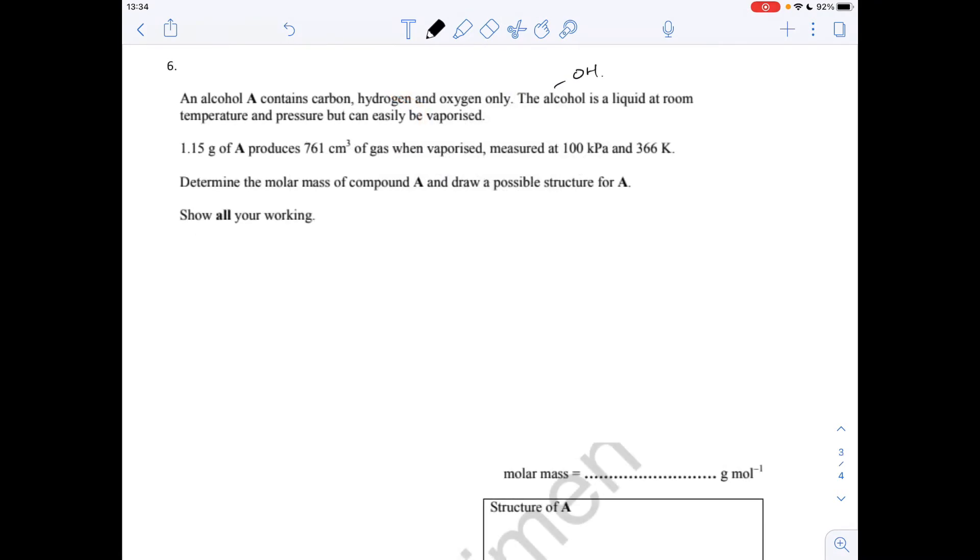Question 6 now, so we've got to determine the molar mass and draw a possible structure for A. We're told it's an alcohol, so it's going to have an OH group. So the information tells us that it's an ideal gas equation because we've got a volume, we've got a pressure, and we've got a temperature.